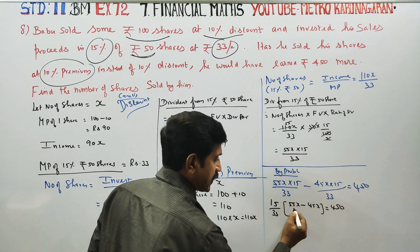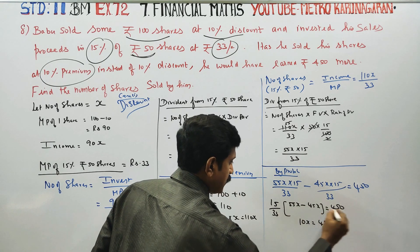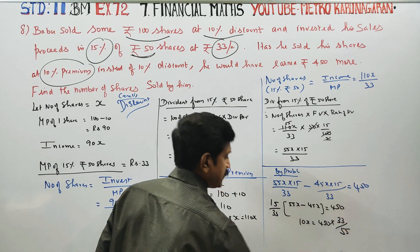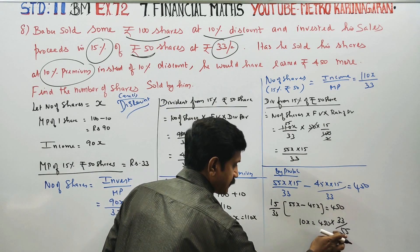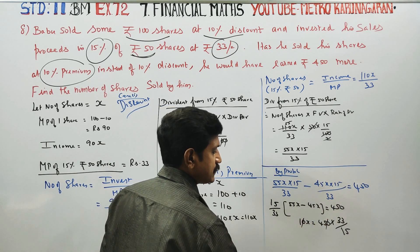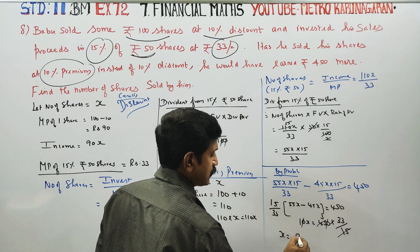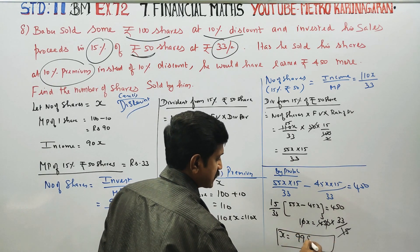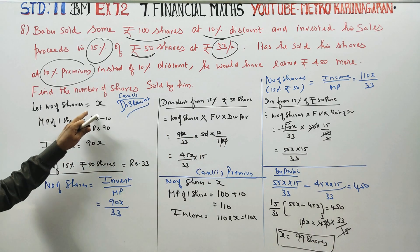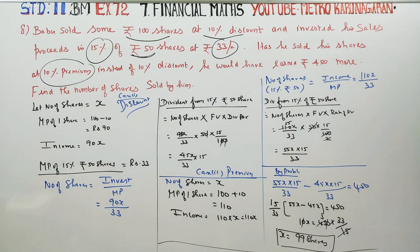Solving further: x is equal to 99. Therefore, the number of shares sold by Bob is 99 shares. Thank you.